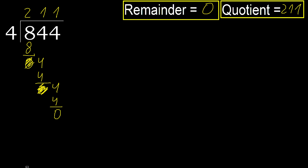Ok, 0 — therefore 844 divided by 4 equals 211.